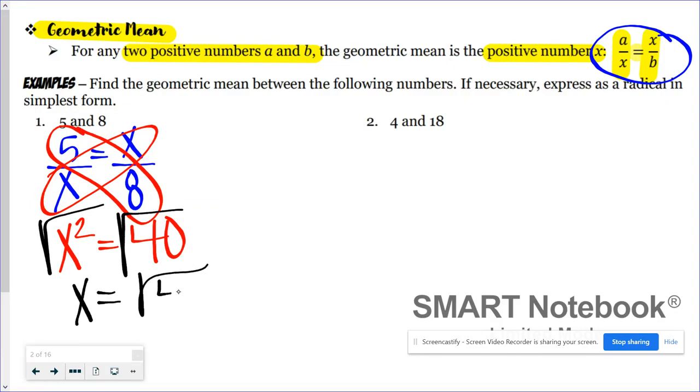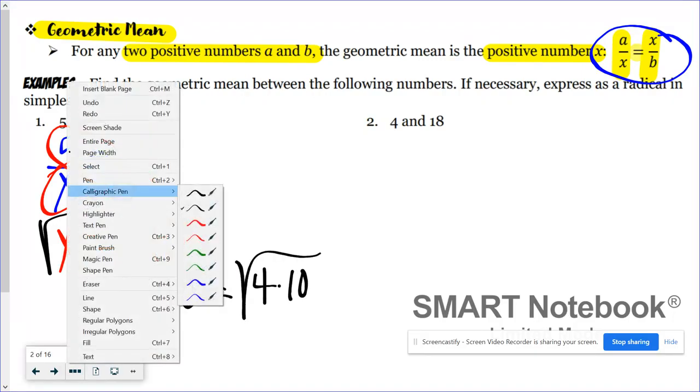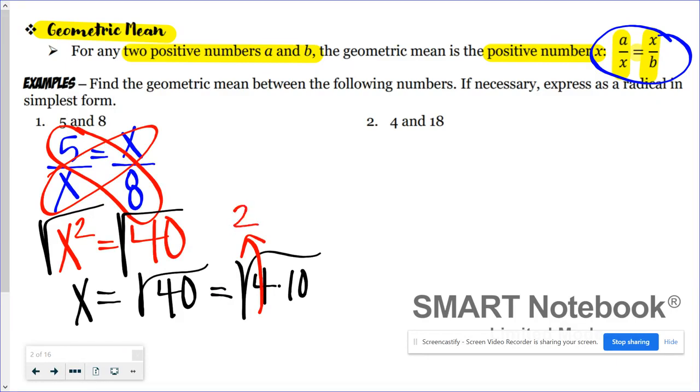Now the directions say that I should express my radical in simplest form. I know that 40 is found by multiplying 4 times 10, so I can take the square root of 4, and the square root of 4 is 2. Square root of 10 can't be broken down, so basically my final answer here is x equals positive 2 root 10.